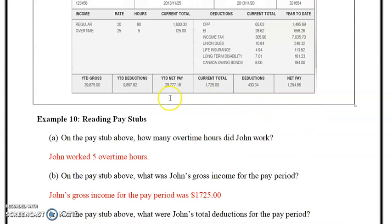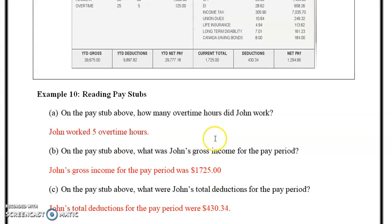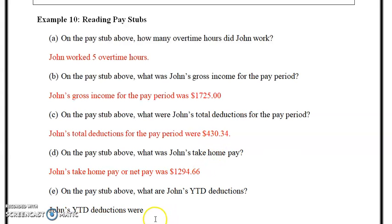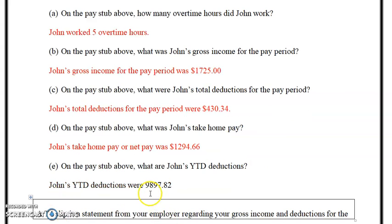On the pay stub above, what are John's year-to-date deductions? The year-to-date deductions are shown right here: $9,897.82. So John's year-to-date deductions were $9,897.82.